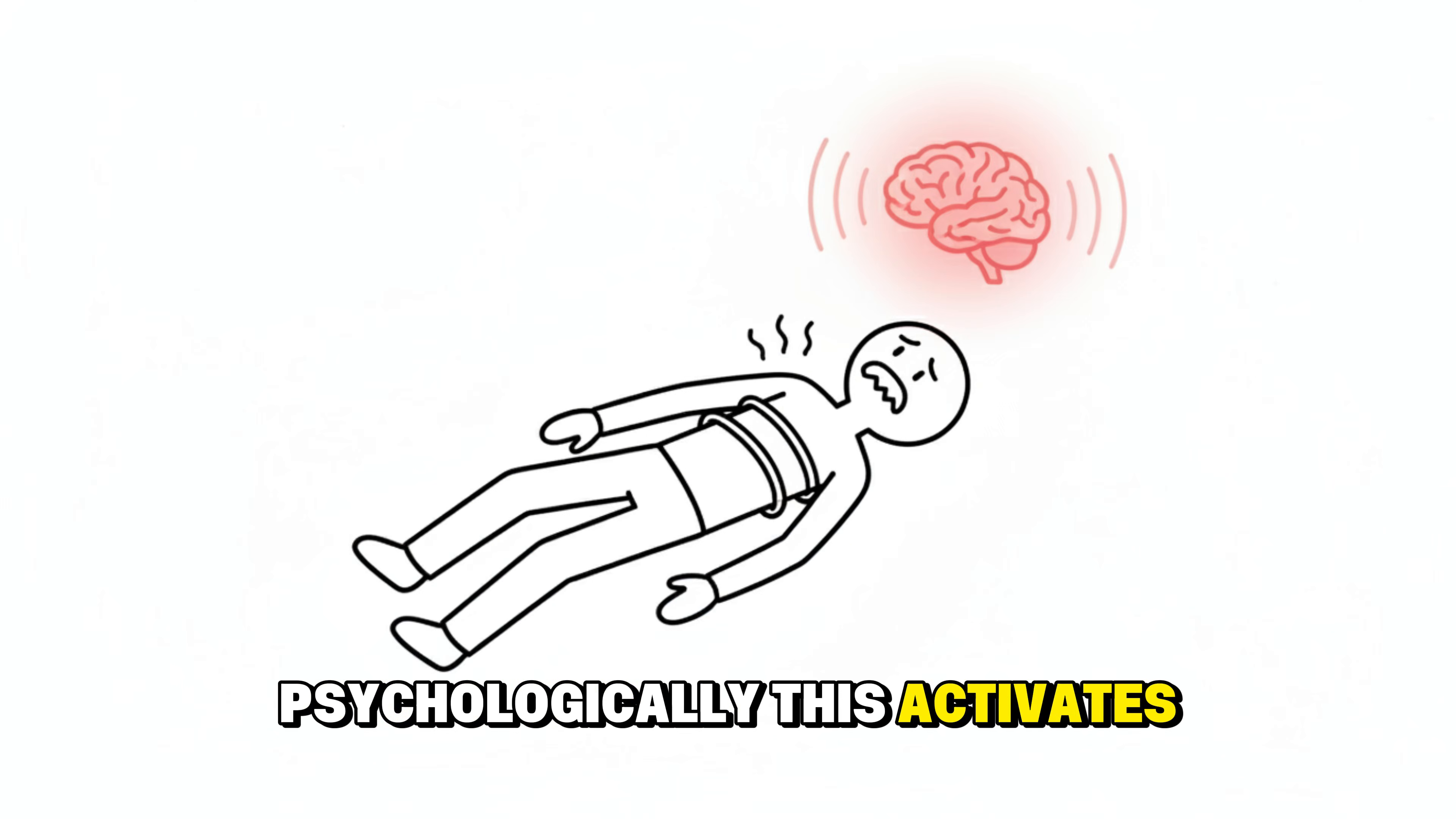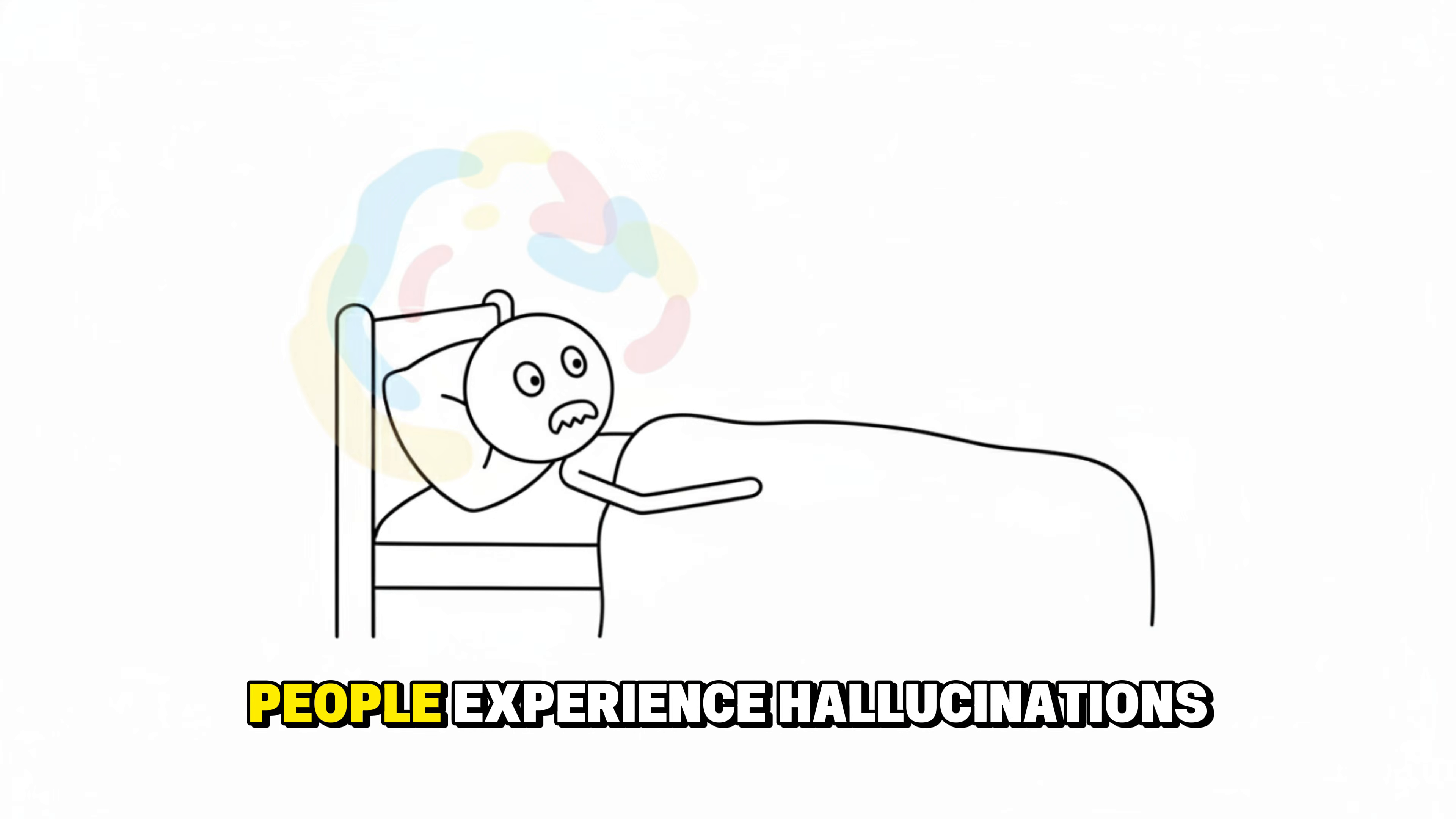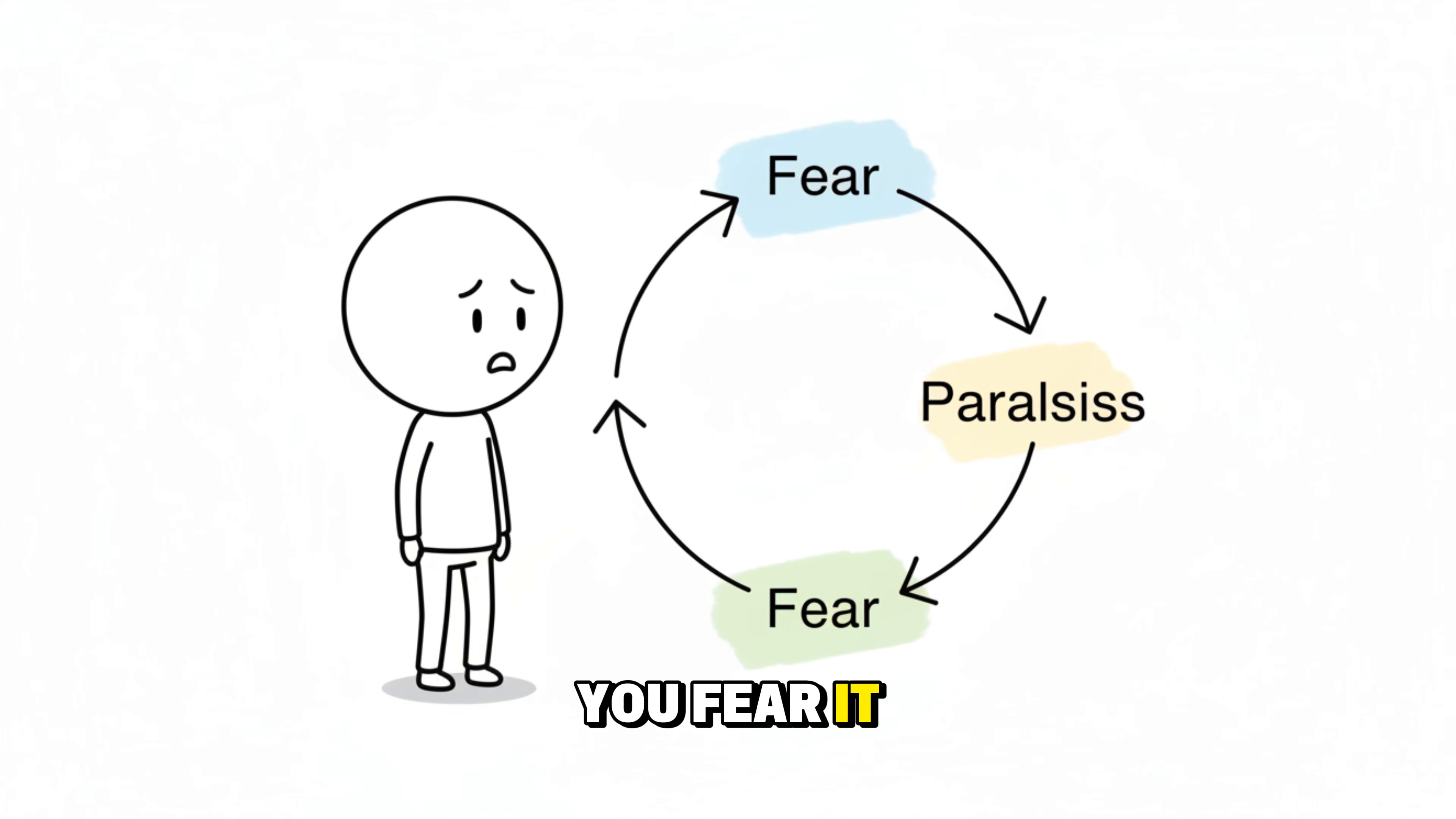Psychologically, this activates the amygdala, the center for fear. Your body can't move, your breathing changes, and your brain interprets this mismatch as danger. That's why many people experience hallucinations. The mind tries to make sense of the fear signals it receives. And the more you fear it happening again, the higher the chance it will return. A classic anxiety loop.